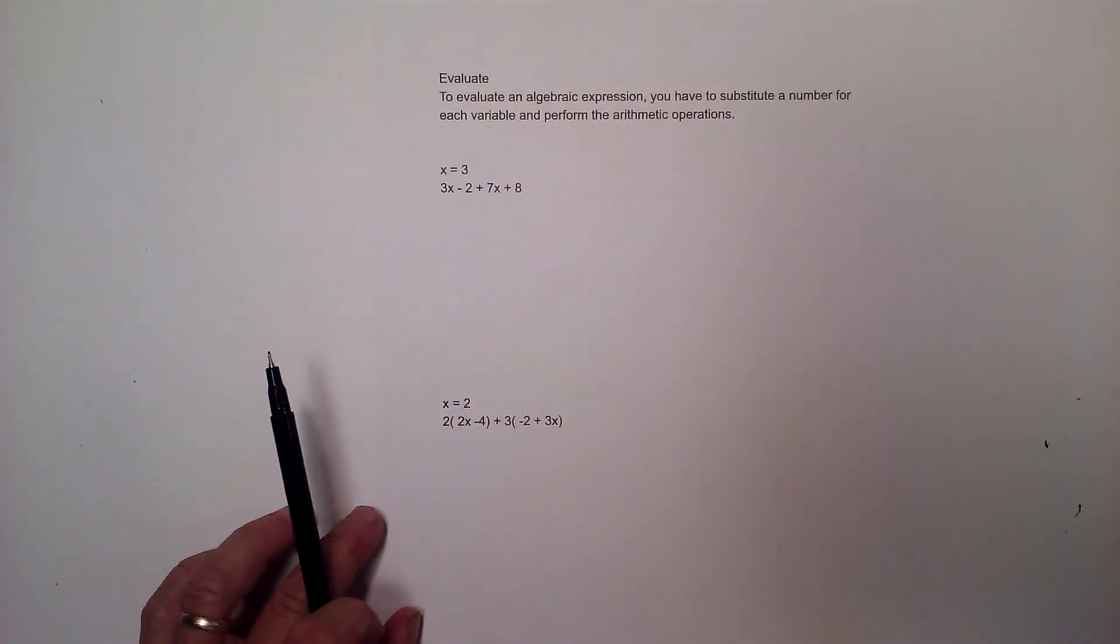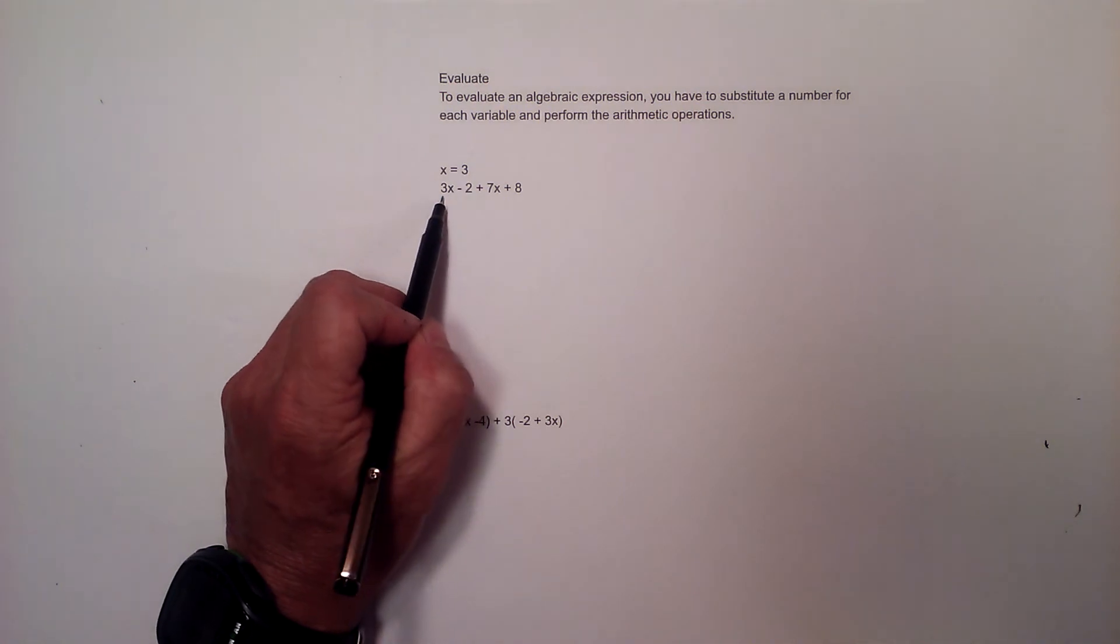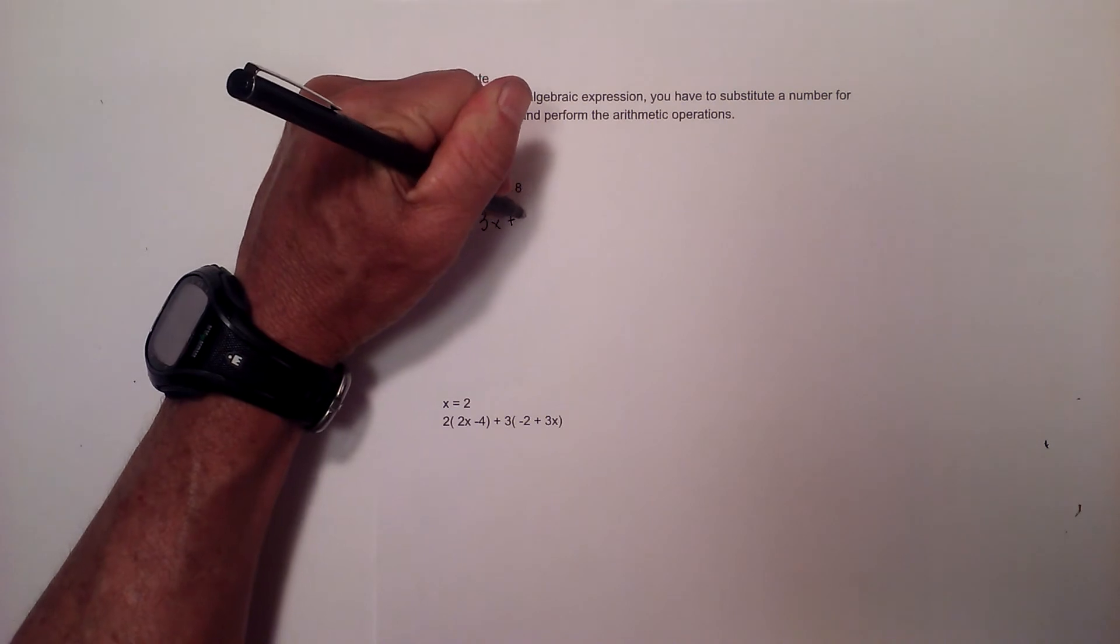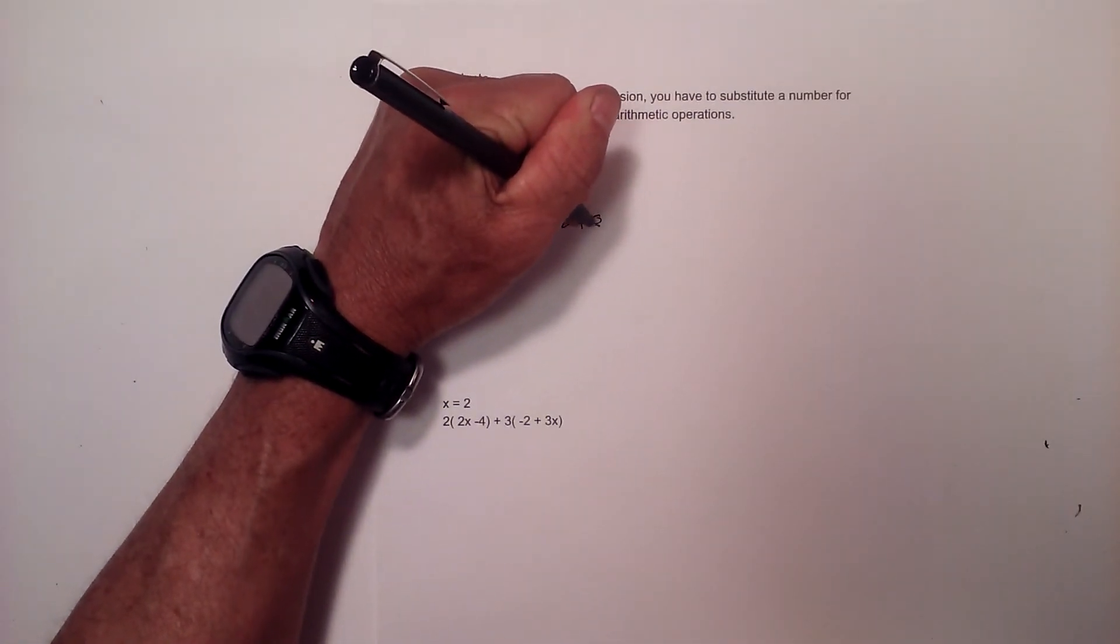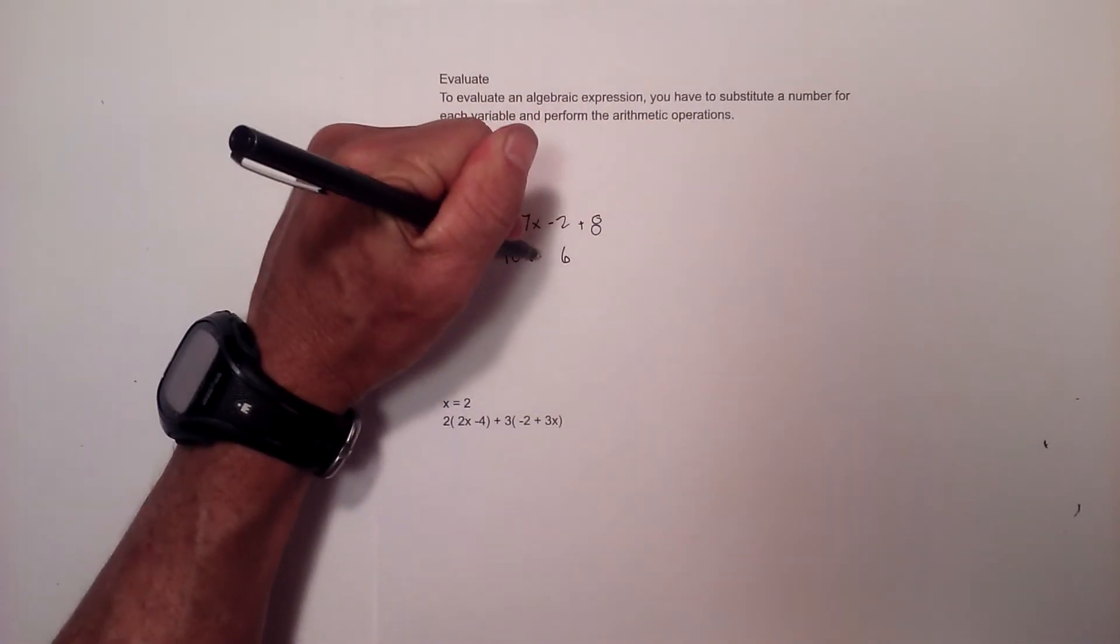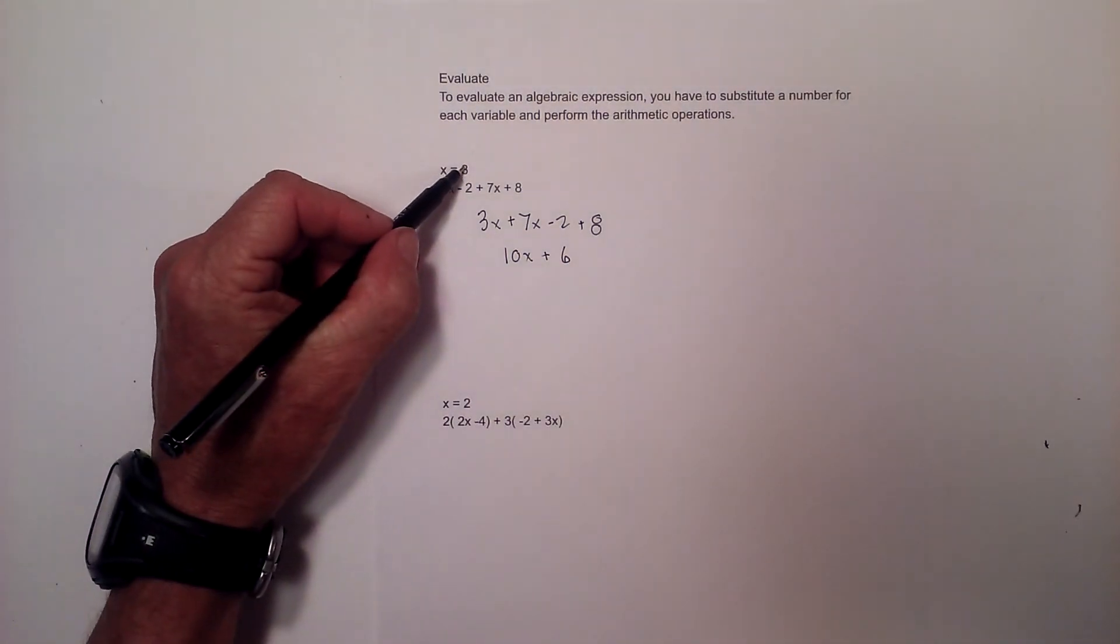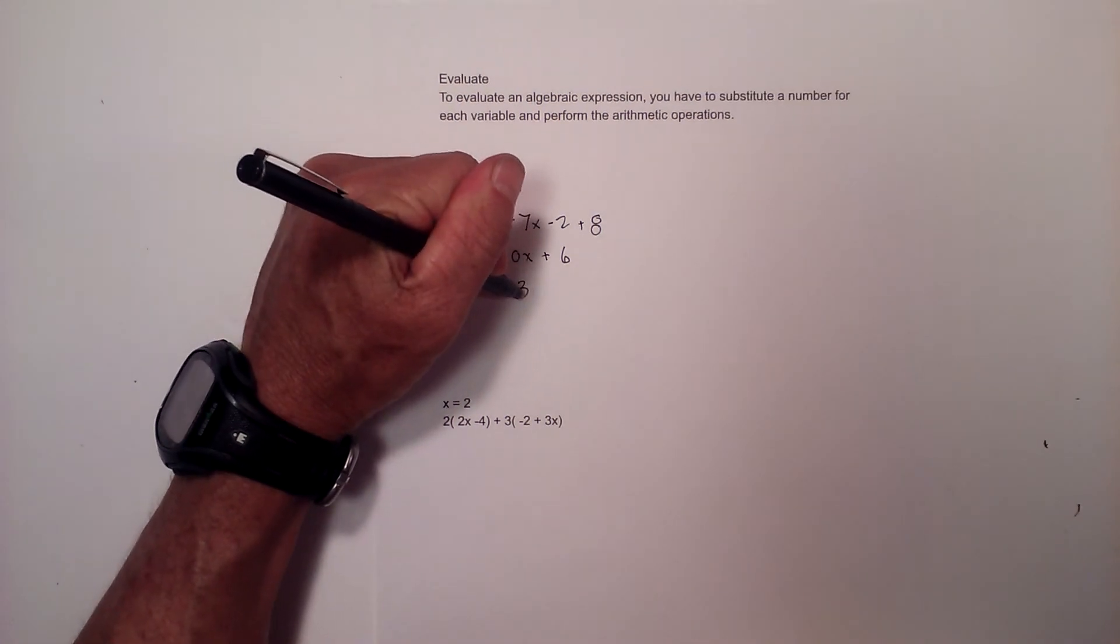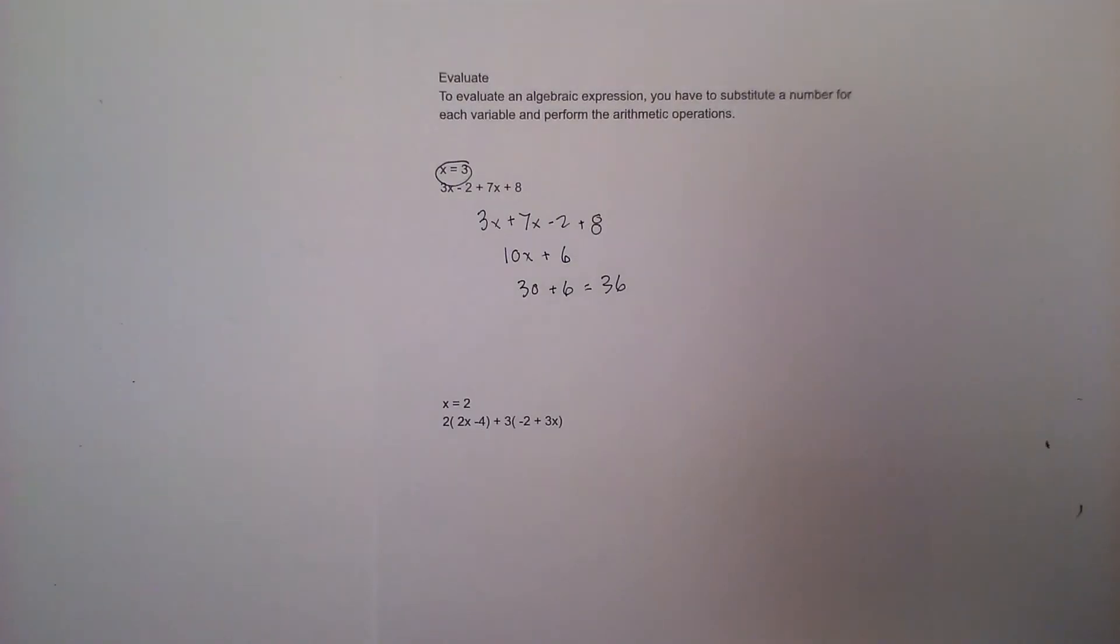You can just plug the number in, but I like to simplify first. I'll put like terms next to each other like I've done before. Then I combine like terms, which gives me 10x + 6. Now I plug 3 into it: 10 times 3 is 30 plus 6, which equals 36.